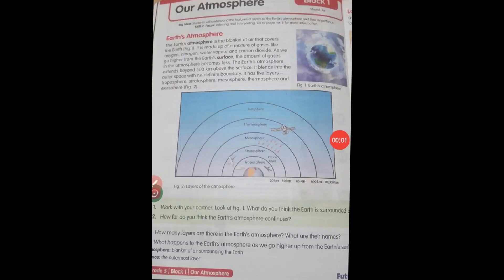Hello students! Today we will see grade 5 science book block number 1: Our Atmosphere. What is meant by atmosphere? Atmosphere means the blanket of air surrounding the Earth.